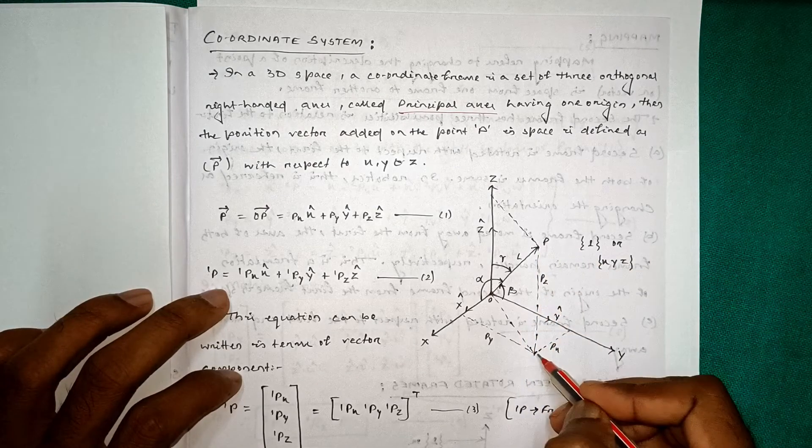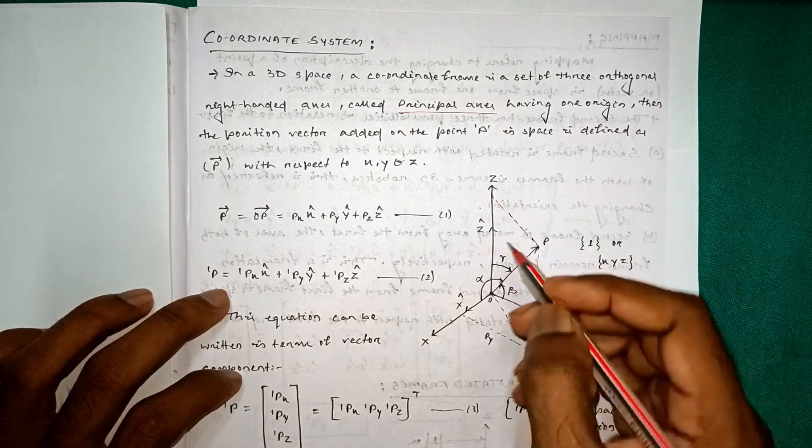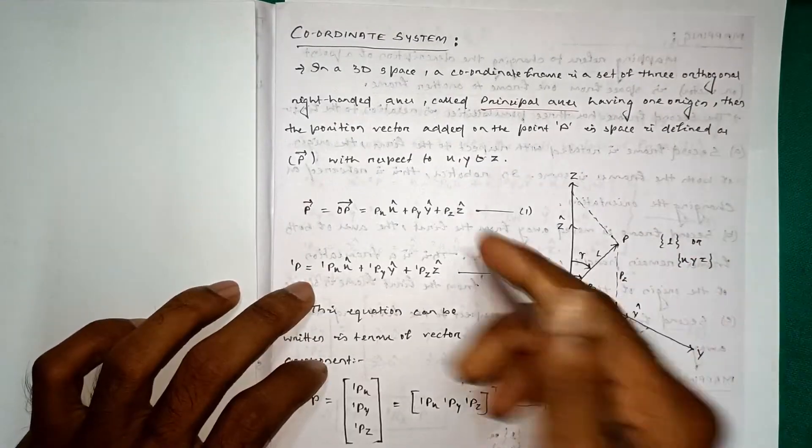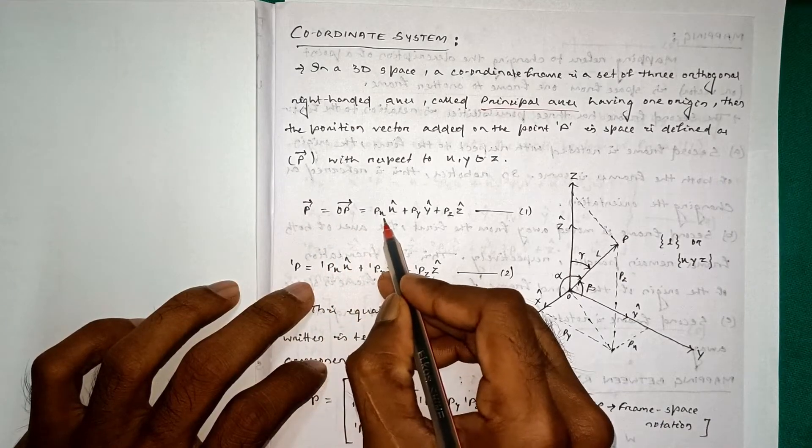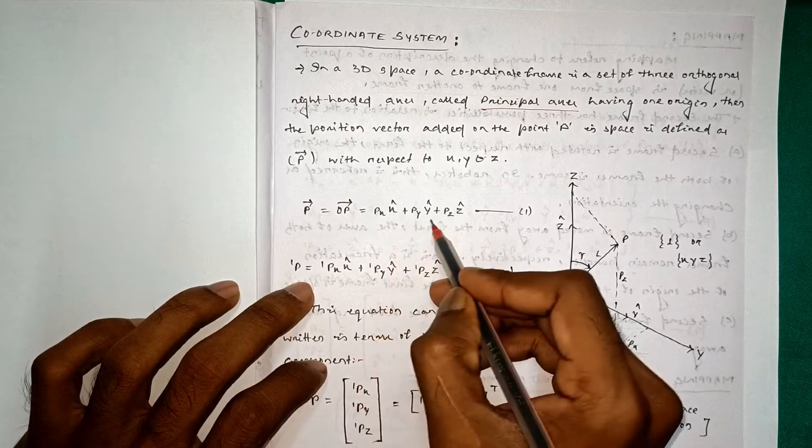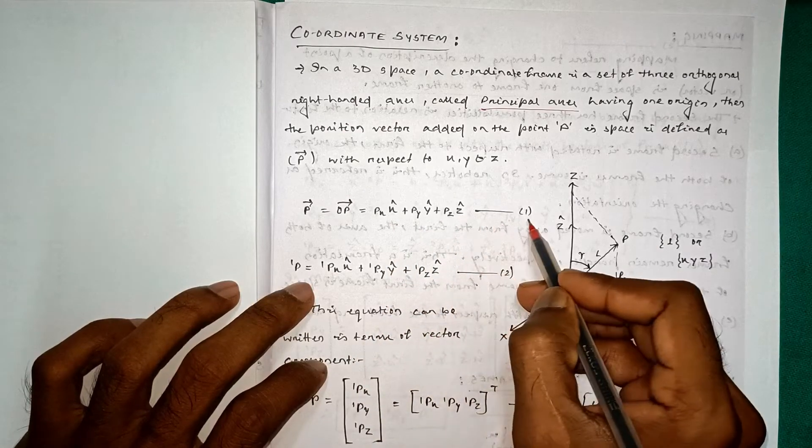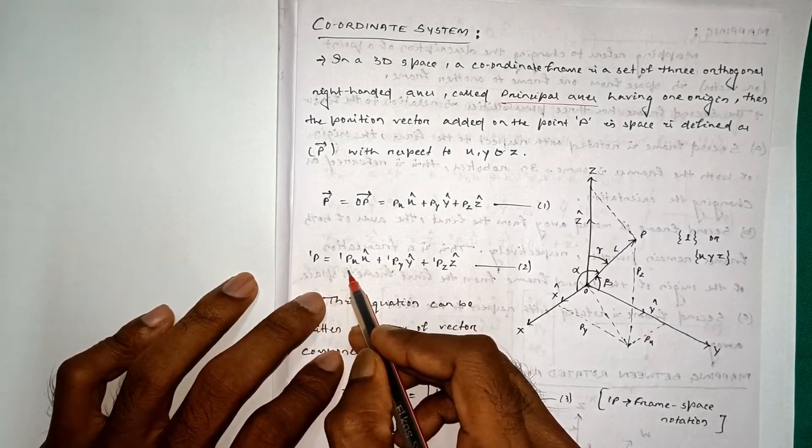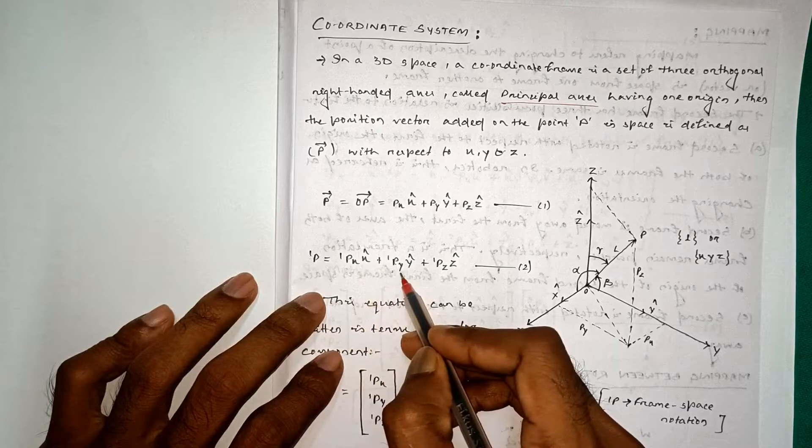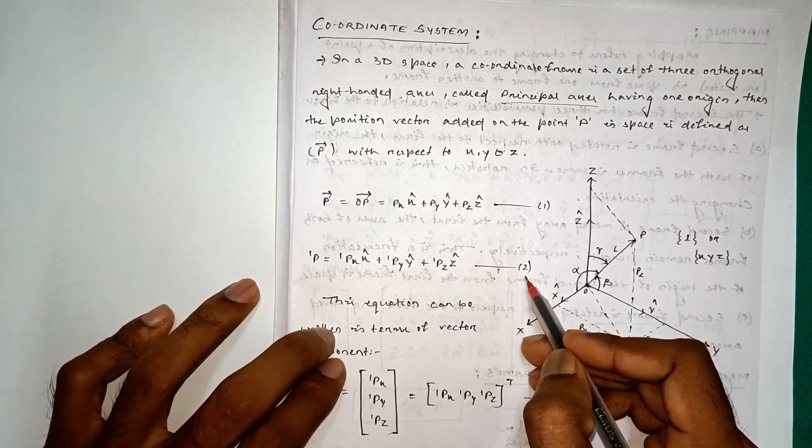So this is PX, this is PY and this is PZ. So P vector is equal to OP vector is equal to PX x cap plus PY y cap plus PZ z cap, and this is our equation number 2.